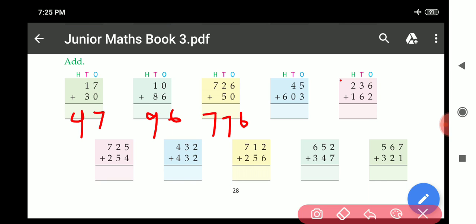6 plus 2, 8. 6 plus 3, 9. 2 plus 1, 3. Answer is 3, 9, 8.